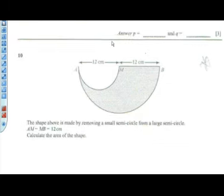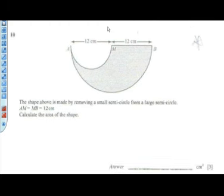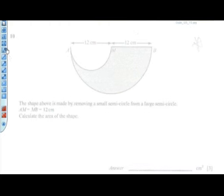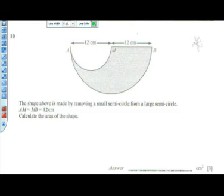All right, can we move on to number 10? Okay, it's a simple matter then of completing the square. All right. The shape above is made by removing a small semicircle from a large semicircle. Okay, calculate the area of the shape, which I presume is the shaded part of the figure. Okay, so any suggestions?